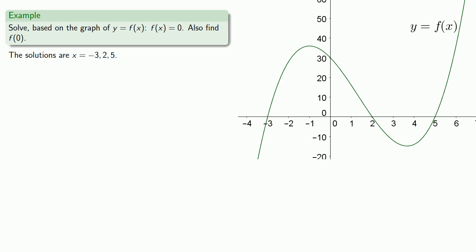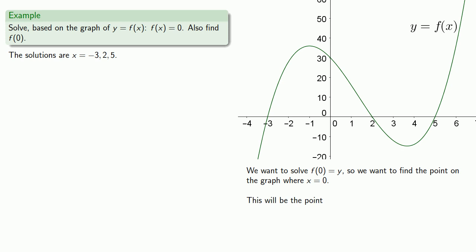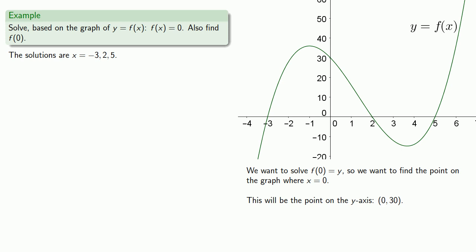Now we'd like to find f of 0. We know that f of x equals y, so let's find the point on the graph where our x-value is zero. That point will be on the y-axis: (0, 30). Equals means replaceable — we want to find f of 0, and f of 0 is y, and our y-coordinate is 30. So f of 0 is 30.